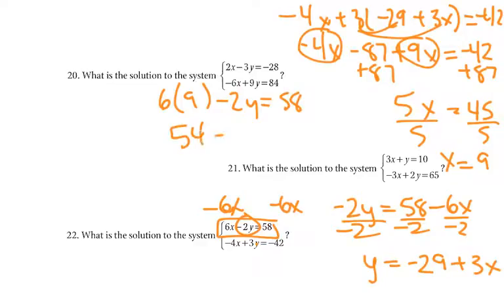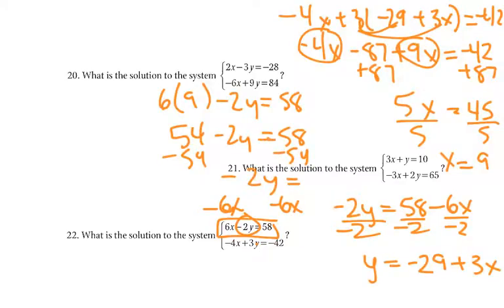So that'd be 54 minus 2y equals 58. Subtract 54, so negative 2y would equal 58 minus 54, which is 4. Divide by negative 2, and y would equal negative 2. There we go with those ones.